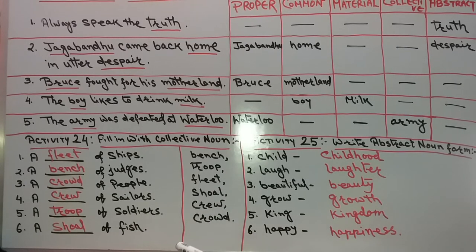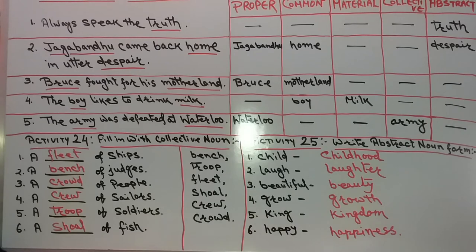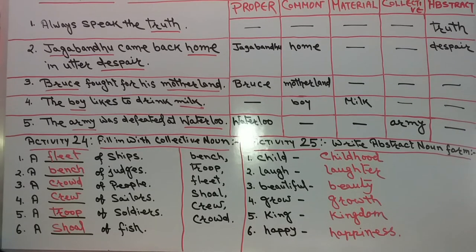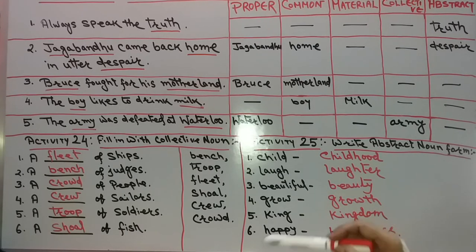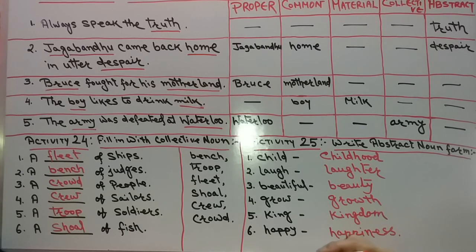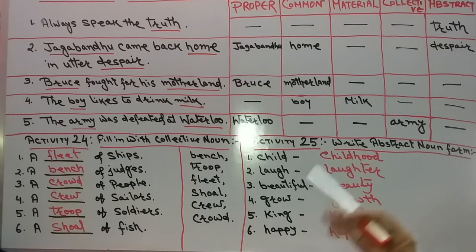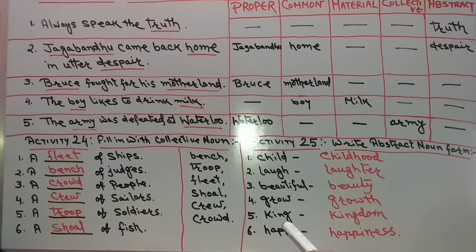Number 6: A blank of fish — a shoal of fish. S-H-O-A-L. Shoal of fish. And if it were dolphins, the group is called a school of dolphins — S-H-O-O-L — school of dolphins. That you should know.